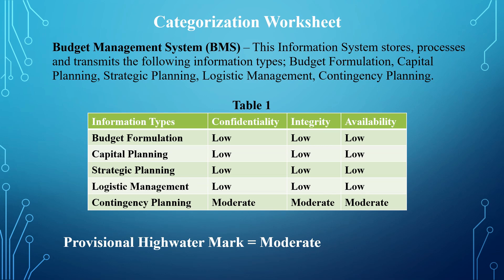For confidentiality, the highest impact level is moderate. The same applies to integrity — the highest impact level to integrity is moderate, and the highest impact level to availability is also moderate. For instance, if budget formulation came up as high for integrity, that would change the overall impact level for integrity to high, since that would be the highest impact to that security objective.